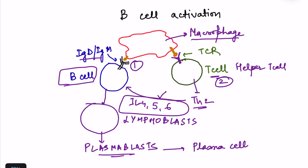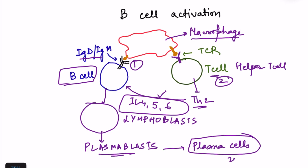Plasma cells are end cells with a very short lifespan of only two to three days, but in that time they produce antibodies at a magnitude of 2,000 antibodies per second per plasma cell. One plasmoblast can form 500 plasma cells. The short lifespan acts as a checkpoint so that production does not continue indefinitely.